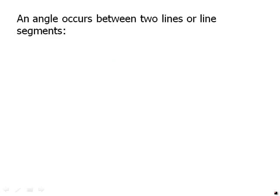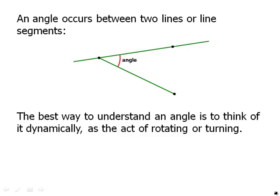An angle occurs between two lines or two segments. So for example, here we have an angle. This happens to be between one line and one segment. The best way to understand an angle is to think of it dynamically as the act of turning or rotating. So in other words, going from here to here. That is what an angle is. It's that dynamic space in between the two lines.